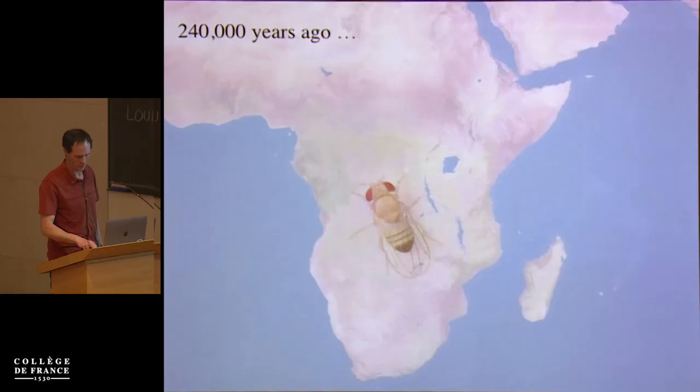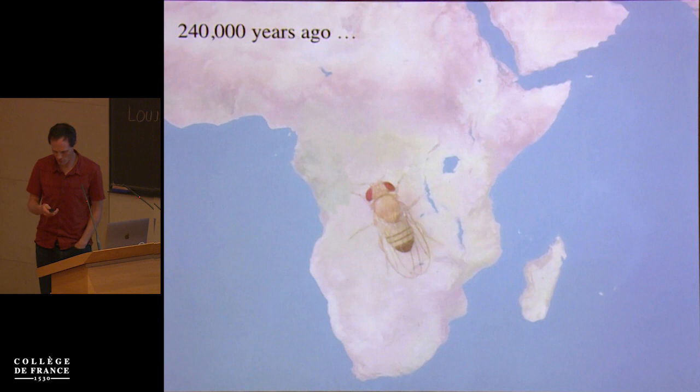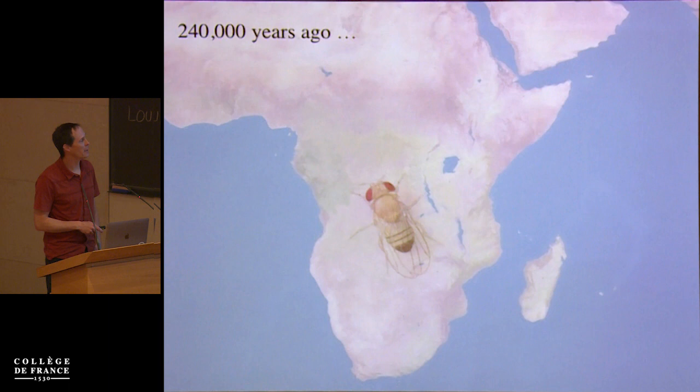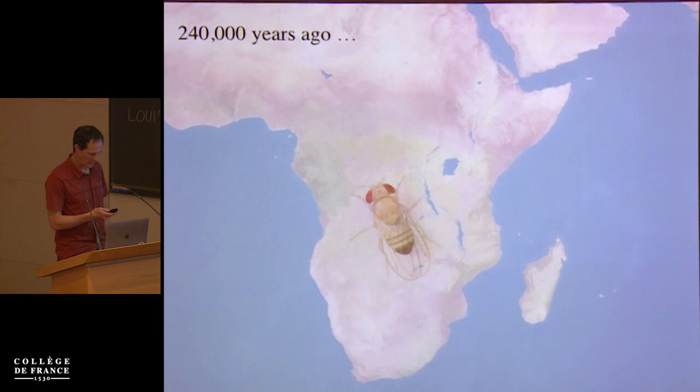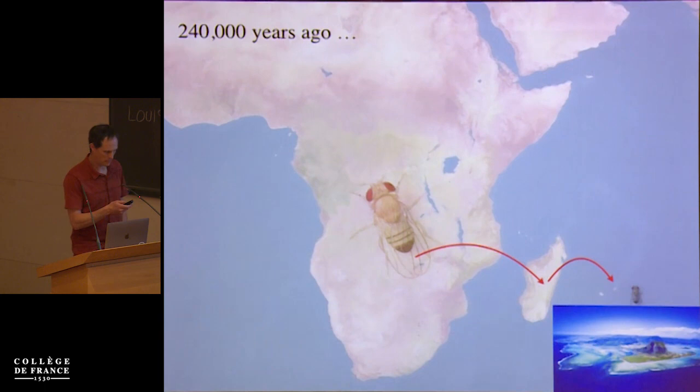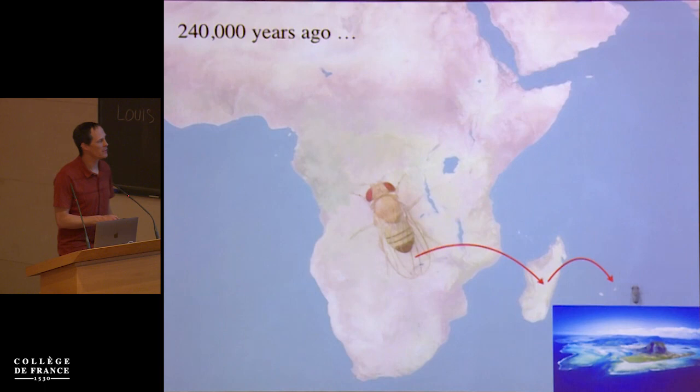So today, our story starts about a quarter of a million years ago in Africa. At least the Neanderthal and Denisovan lineages had already left Africa. At the time, it was inhabited by a very charismatic small dipteran that made its living on rotted fruit. At some point, a propagule — a fly, a group of flies, an inseminated female — made its way to the lovely tropical island of Mauritius, probably via Madagascar.